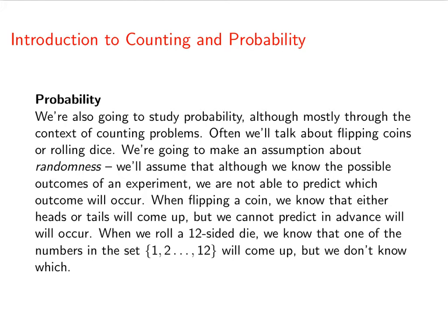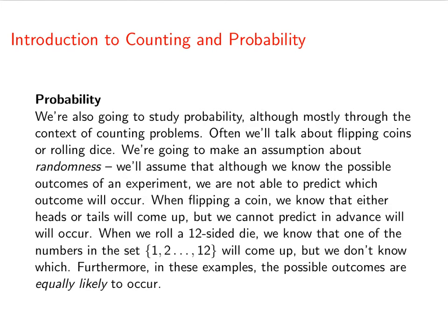So you don't know what will come up. You cannot predict in advance what will happen. When you roll a 12-sided die, you know that one of the numbers from 1 to 12 will come up. You just don't know which. And in all of these examples, the possible outcomes are equally likely to occur.